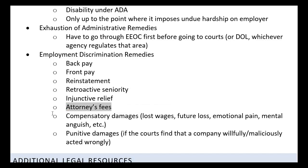Attorneys fees are a very significant type of remedy. Going to court can be extraordinarily expensive because it costs a lot of money to pay attorneys to handle the case, and it's very difficult to go to court without an attorney. All the different types of remedies discussed thus far are included under what we call compensatory damages — also called real damages or actual damages. These are things I can quantifiably prove and say I need to be reimbursed for: lost wages, future lost wages, emotional pain, and mental anguish, which are a little harder to quantify but still considered compensatory damages.